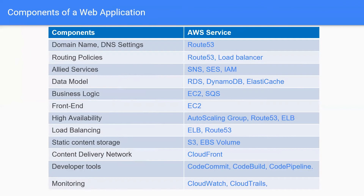For working with data models, you have various kinds of databases. For relational databases you have RDS, which gives you multiple options to choose from. You have in-memory data stores in the form of ElastiCache, and you have NoSQL databases like DynamoDB. For implementing your business logic or hosting your code, you have EC2 instances, which can be used as web servers or application servers. For complex applications where multiple components talk to each other, you can use services like Simple Queue Service (SQS), Simple Workflow (SWF), and other application integration services.